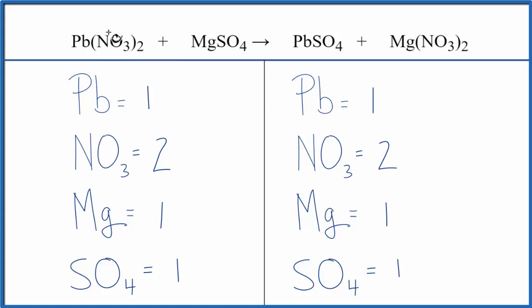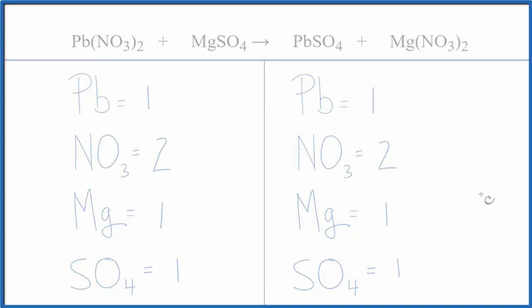So by counting these polyatomic ions as just one item, if they appear on both sides, it makes it much easier to balance. This is Dr. B, and thanks for watching.